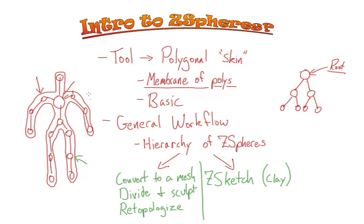There are a few caveats to that, but overall it's extremely smooth — almost spooky how well it works. After that point, once you get a nice Z-Sketch in place, your Z-Sketch work where you've been painting detail is entirely independent of your Z-Spheres. When you convert to a mesh, you're not converting those original spheres — you're converting the result of the Z-Sketch.